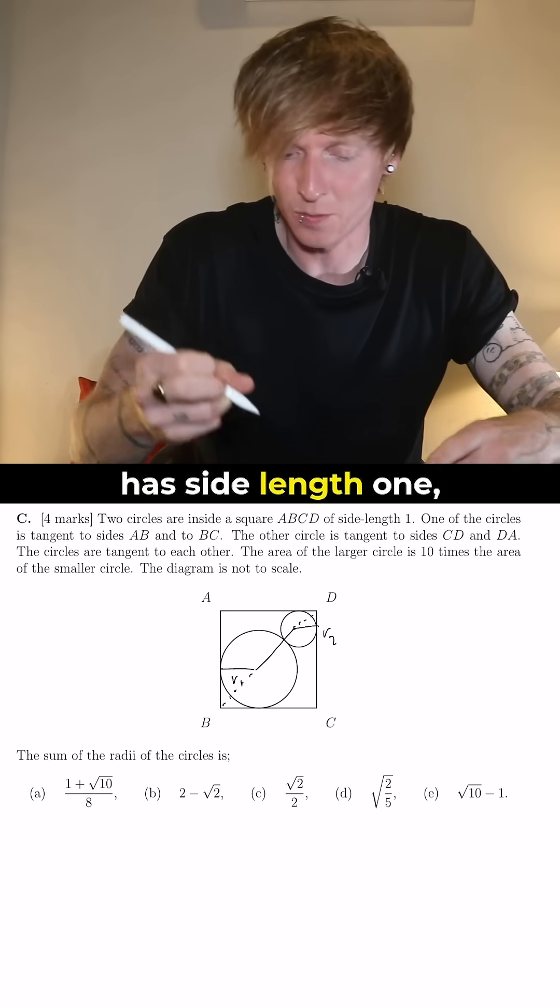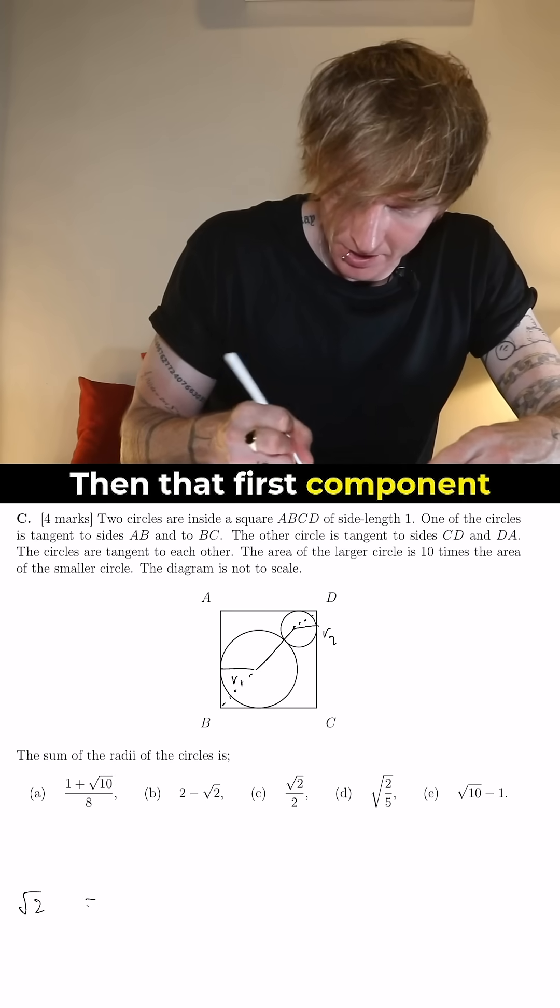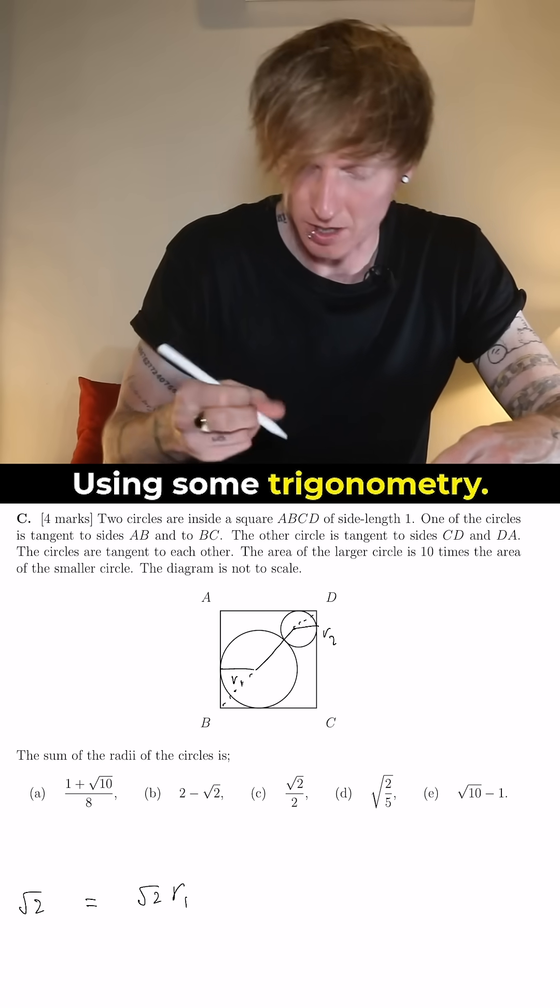So the square has side length 1, so we know the total length of that line is root 2. Then that first component is root 2 times R1, using some trigonometry.